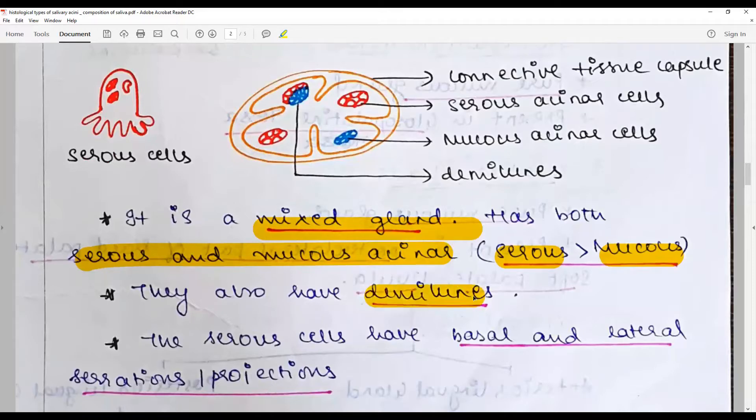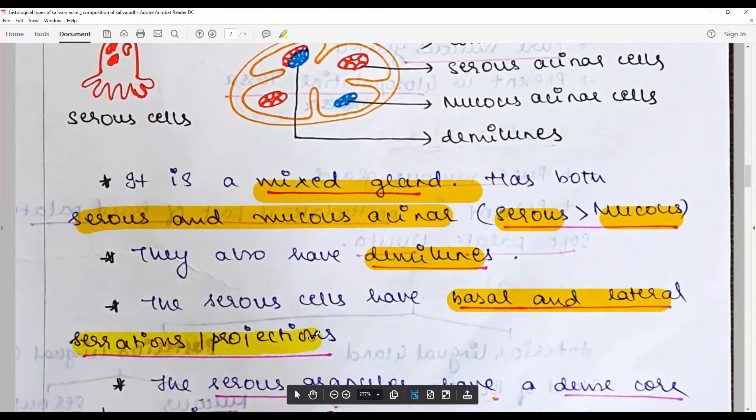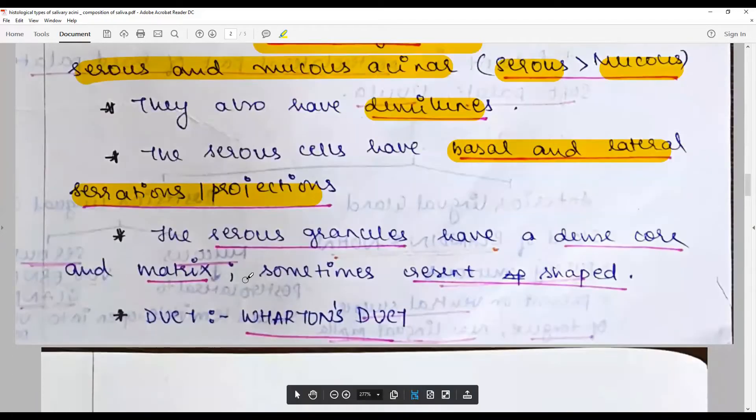They have basal and lateral striations, projections or what we call microvilli. The serous granules have a dense core and matrix, sometimes crescent shape. The duct of this gland is Wharton's duct.